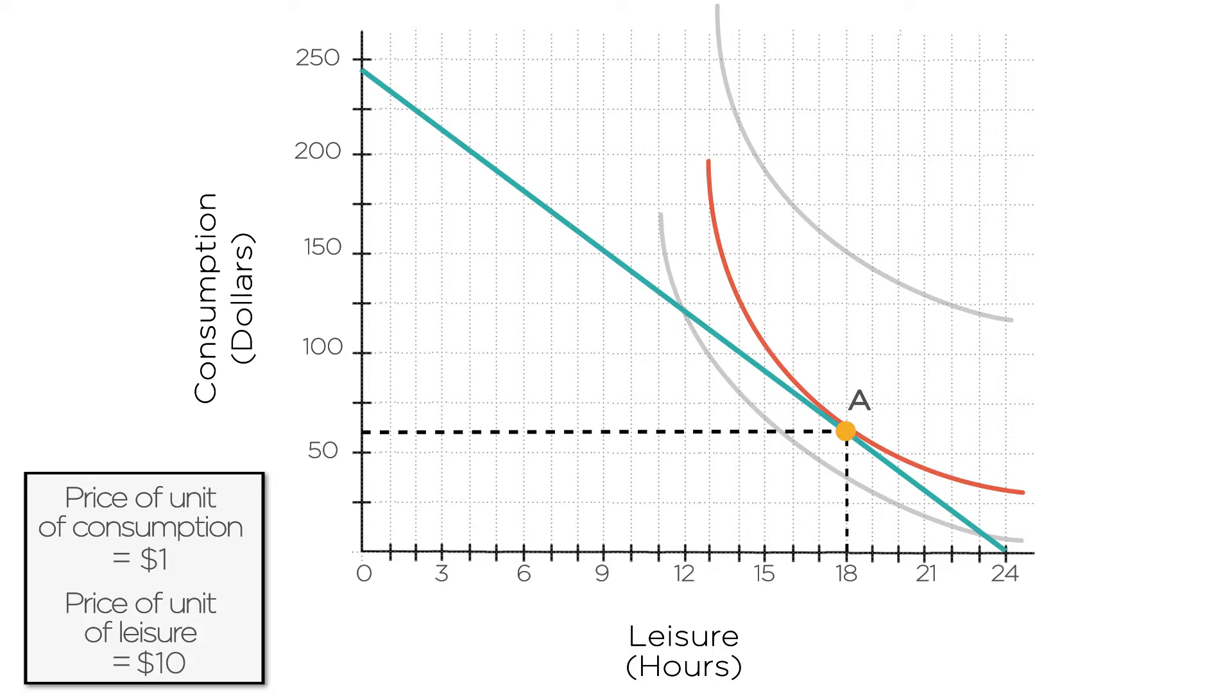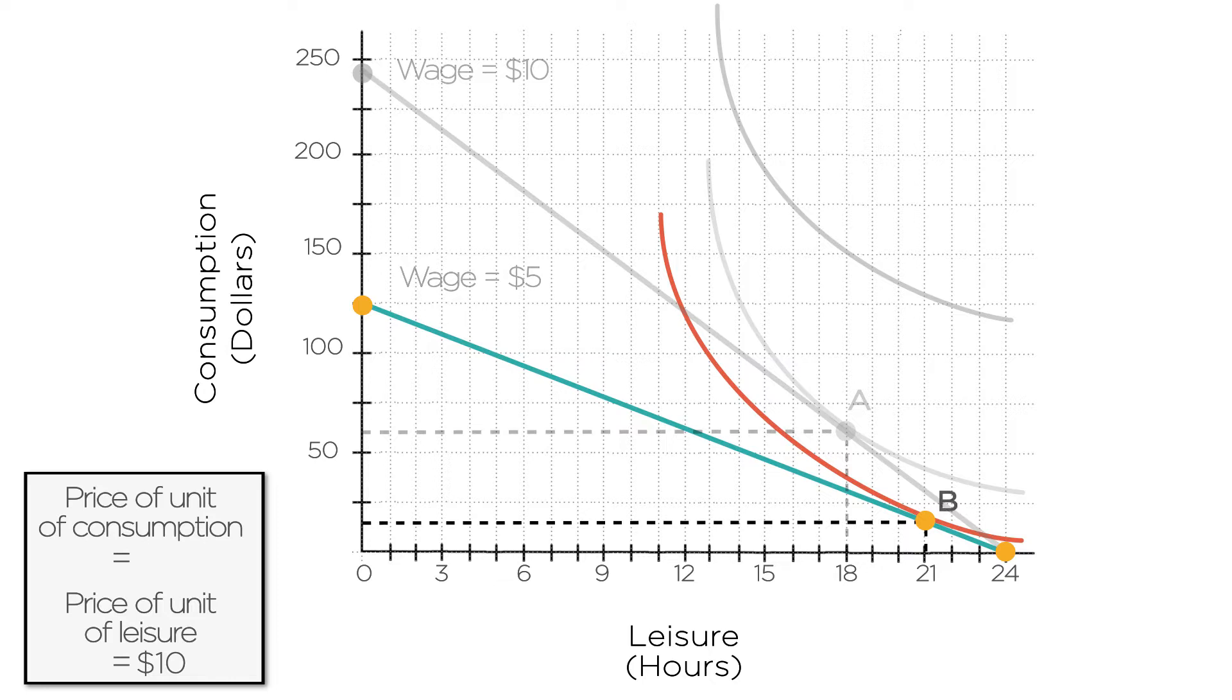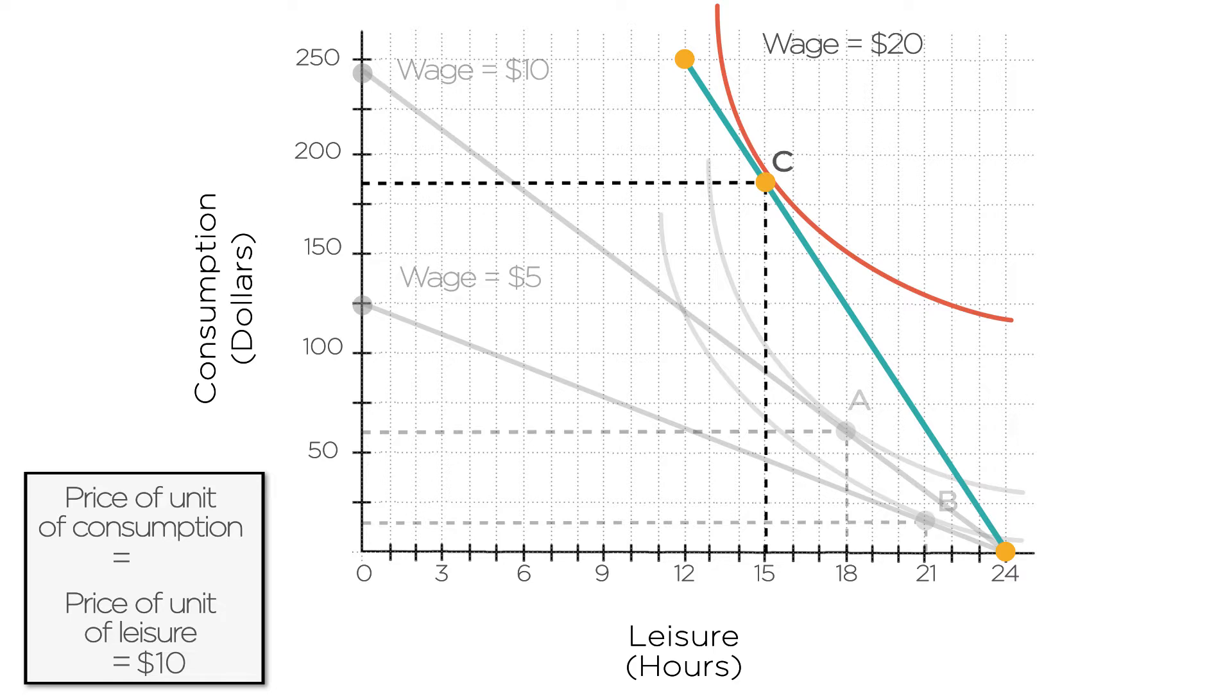And we can do this exercise for many other wage rates other than $10 an hour. For example, at a wage of $5 an hour, you'd choose to work less and consume less at point B. At a wage of $20 an hour, you'd probably choose to work more and consume more at point C. For each wage, we could construct the budget constraint, sketch indifference curves, and choose the amount of leisure and consumption corresponding to the point where an indifference curve is just tangent to the budget constraint.